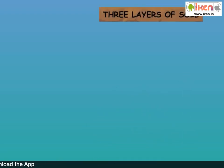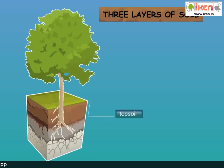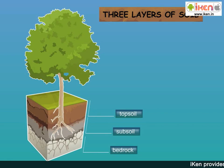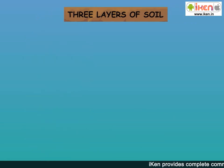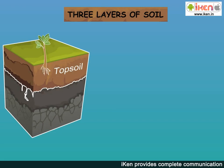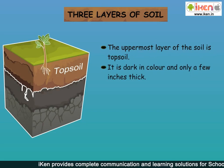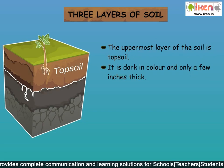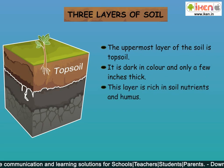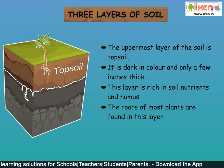The three layers of soil are topsoil, subsoil, and bedrock. The uppermost layer of the soil is topsoil. It is dark in colour and only a few inches thick. This layer is rich in soil nutrients and humus. The roots of most plants are found in this layer.